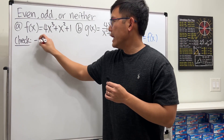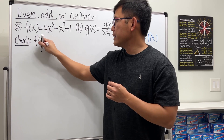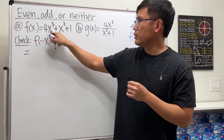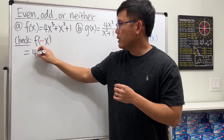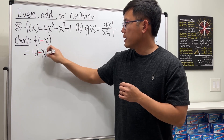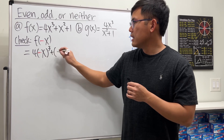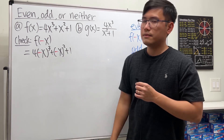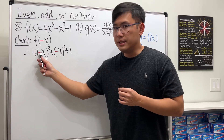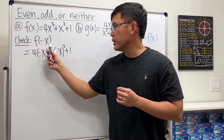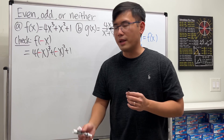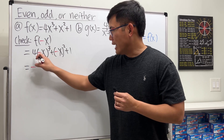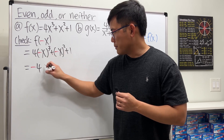We check f of negative x, which means we plug in negative x into the function: 4 times negative x to the third power, plus negative x squared, plus 1. Negative 1 raised to the third power is still negative 1, so the negative stays for the first part, giving us negative 4x to the third power.